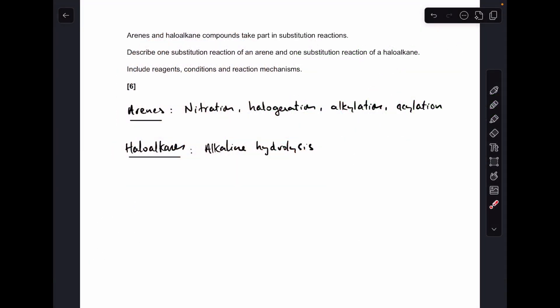Okay, so let's make a start. It's quite an open-ended question because we've got to talk about substitution reactions involving an arine and a haloalkane. For the case of the arines, there's a few options we can go for: nitration, halogenation, alkylation, and acylation.